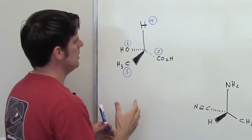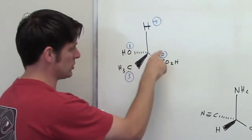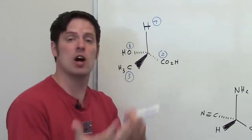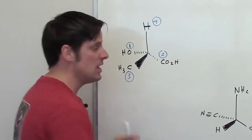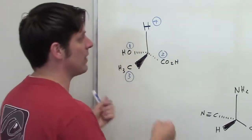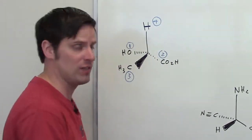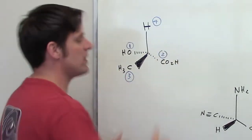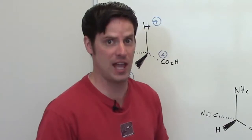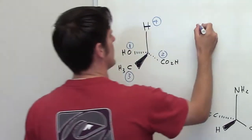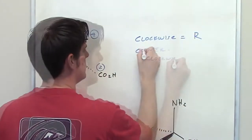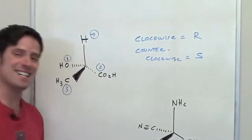Now we have to determine what direction the circle is going from one to two to three — clockwise or counterclockwise? If it's going clockwise, that is the direction you would turn a car steering wheel if turning right, and it would be R. If it's going counterclockwise, that is the direction you'd turn your steering wheel if turning left, and it would be S. Clockwise equals R, counterclockwise equals S.